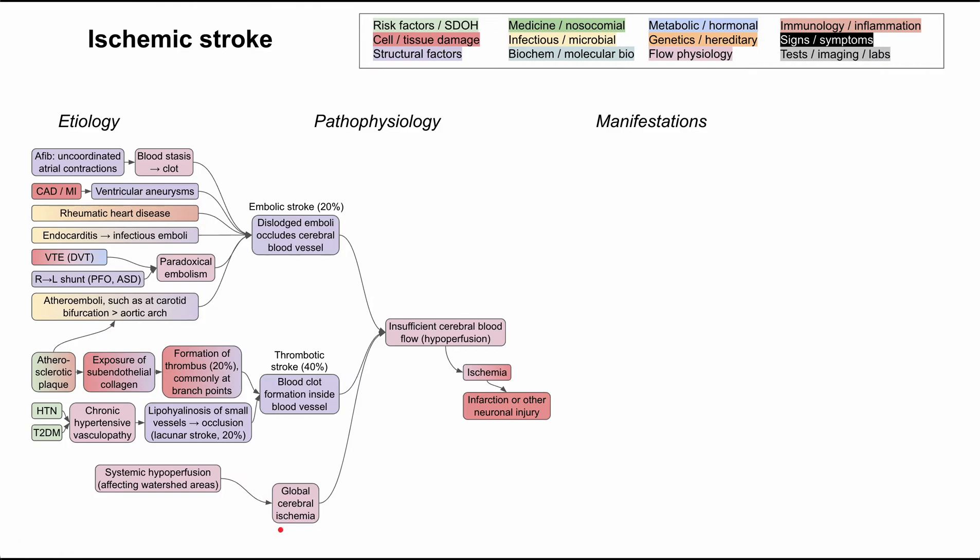Lastly, we have global cerebral ischemia. This happens when the blood flow to the brain is low across all the blood vessels going to the brain, rather than in one localized area with an embolism or thrombotic stroke. So this can happen with systemic hypoperfusion, and this typically affects the watershed areas.